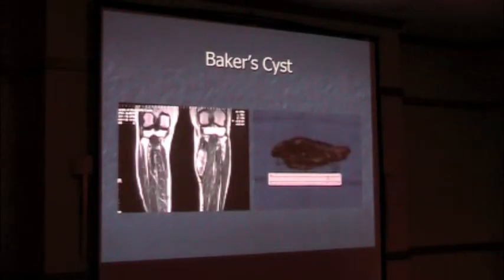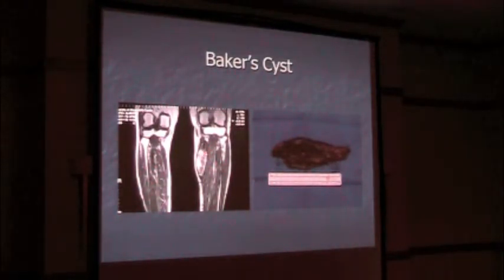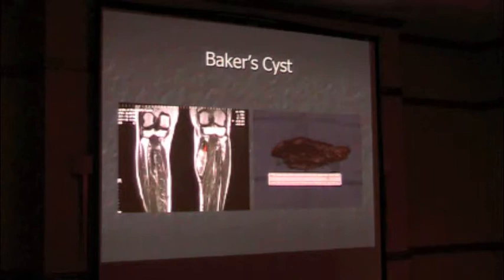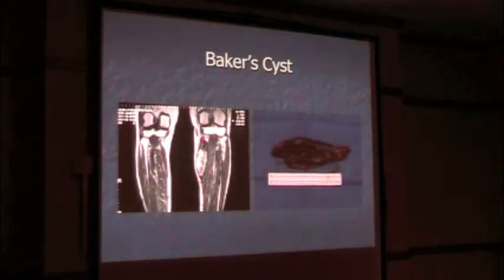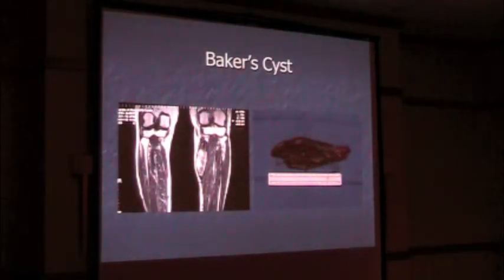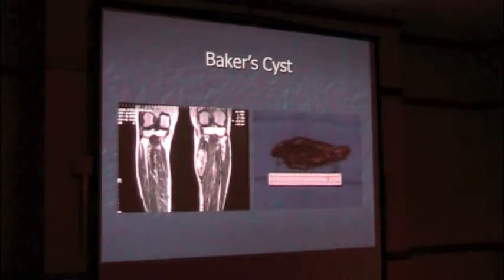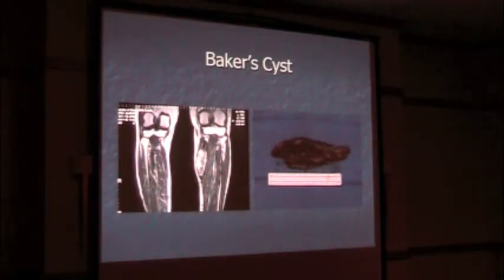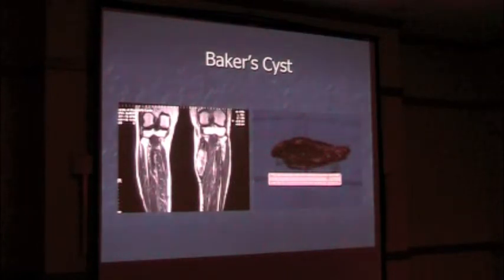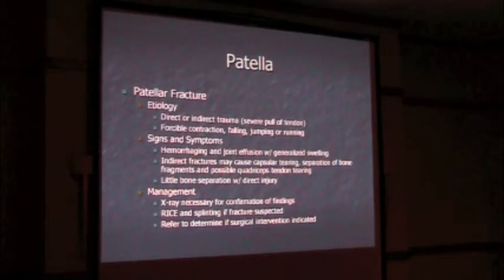This is the Baker cyst I was talking about — it's the MRI here, looking at basically the posterior aspect of the knee. This is the calf region, this is the cyst here. The neurovascular structures were back here, so it started compressing on them. The patient started developing neurologic and vascular symptoms. This is the cyst after we took it out — it was actually a pretty good-sized cyst.